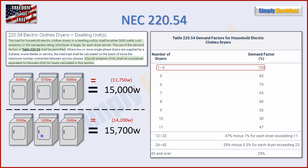Let's try a different set of three dryers: 5,500 watts, 5,200 watts, and 3,500 watts. Adding those straight up gives 14,200 watts, but the 3,500 watt dryer must be brought up to 5,000 minimum. So it's 5,500 + 5,200 + 5,000, which gives 15,700 watts. Again, since it's three dryers we apply a 100% demand factor, so 15,700 watts is our value.